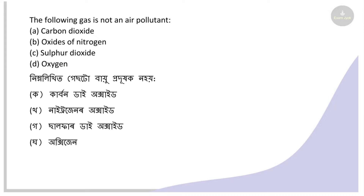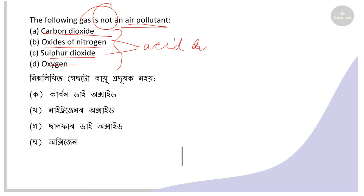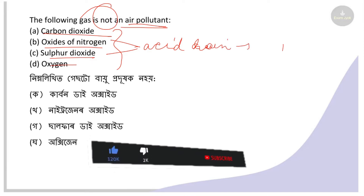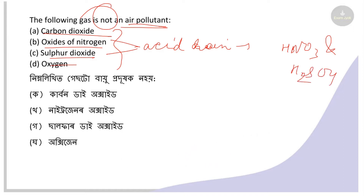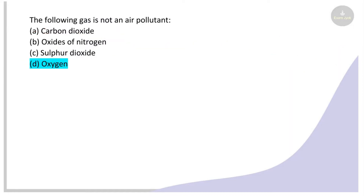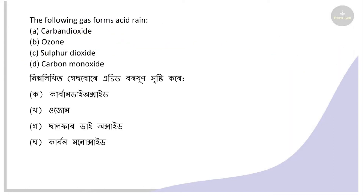Next: Which of the following gas is NOT an air pollutant? Options: carbon dioxide, nitrogen oxide, sulfur dioxide, oxygen. Nitrogen dioxide and sulfur dioxide are pollutants that harm our environment and biosphere — they cause acid rain through formation of nitric acid and sulfuric acid. Carbon dioxide causes greenhouse effect problems. So oxygen is the right answer.